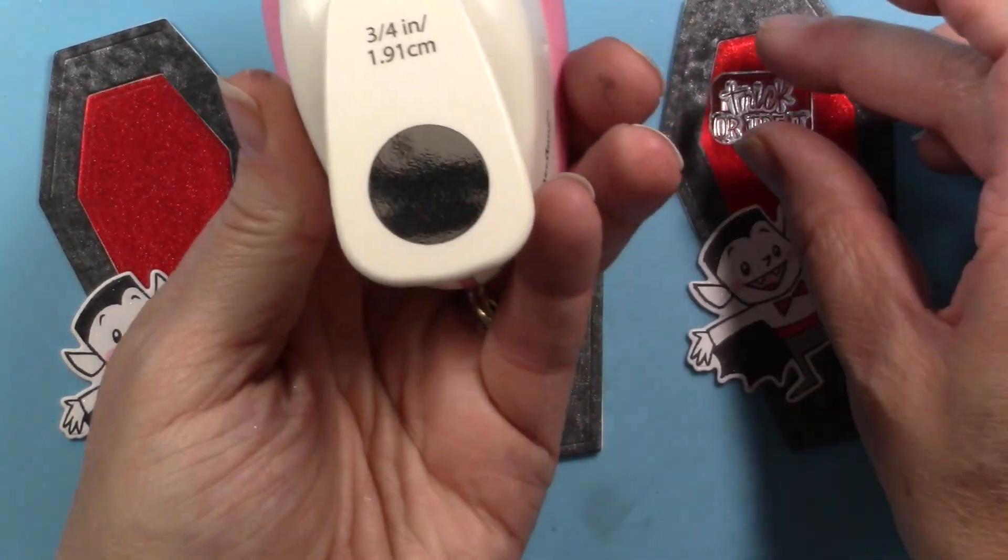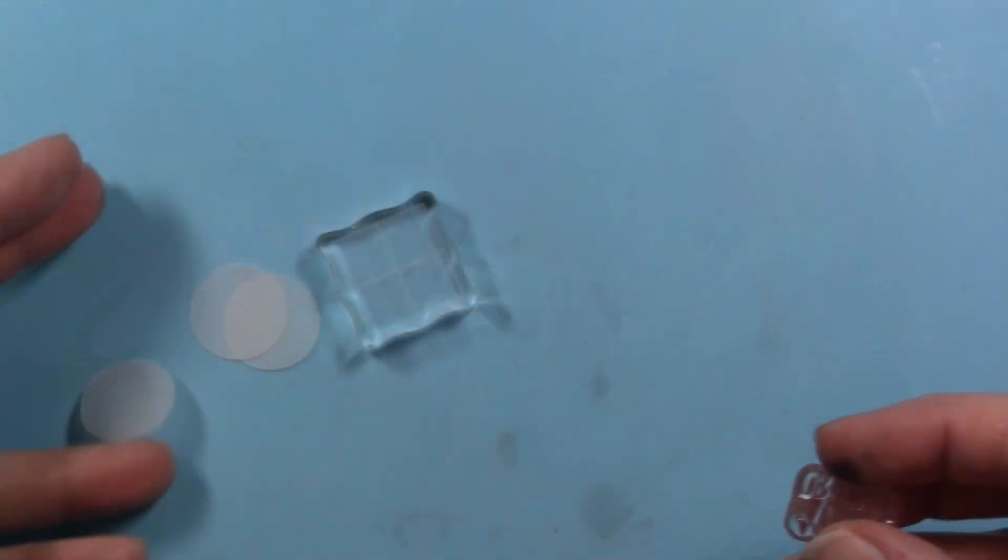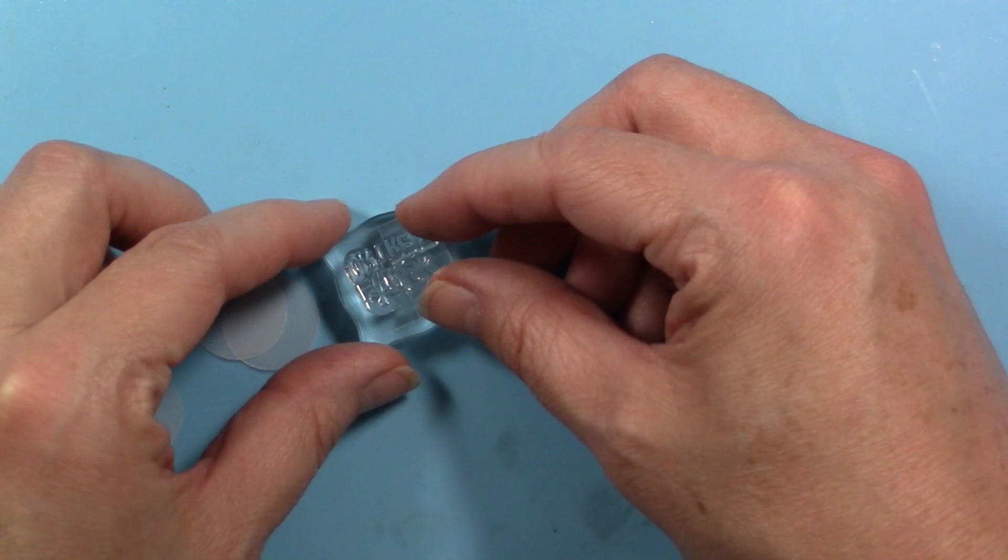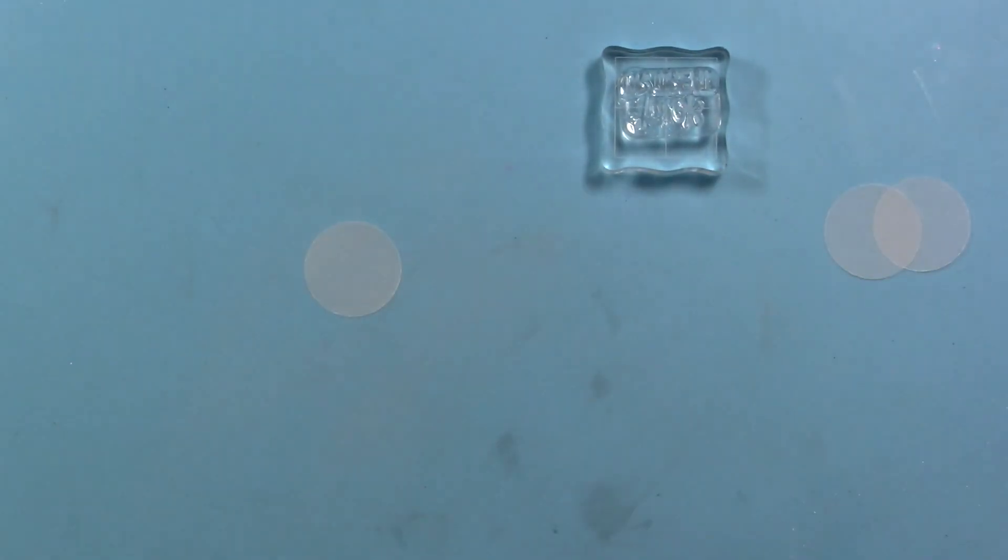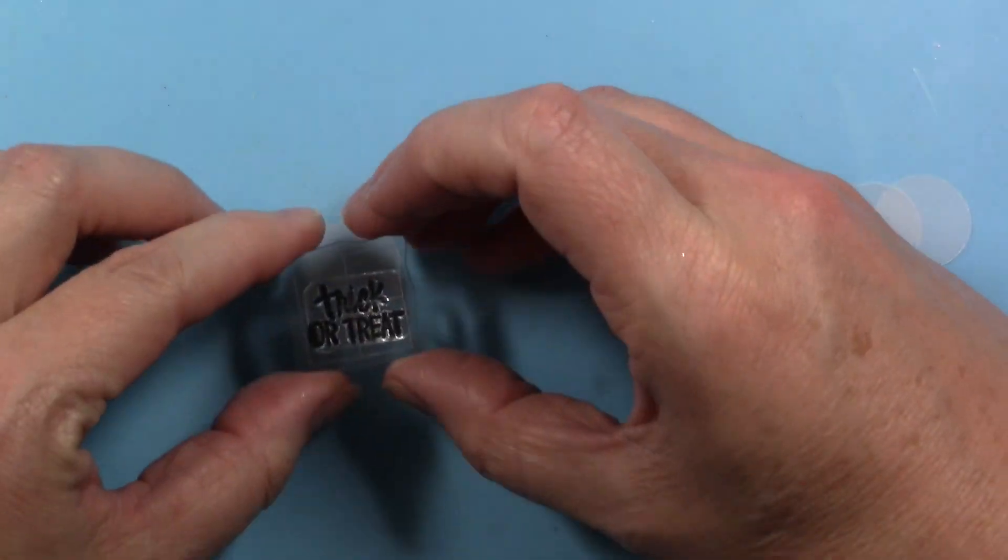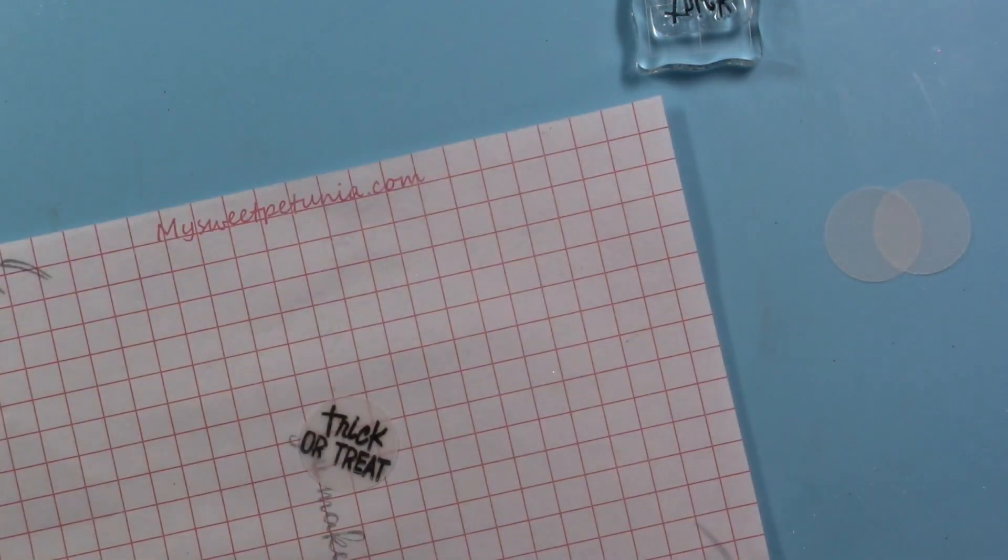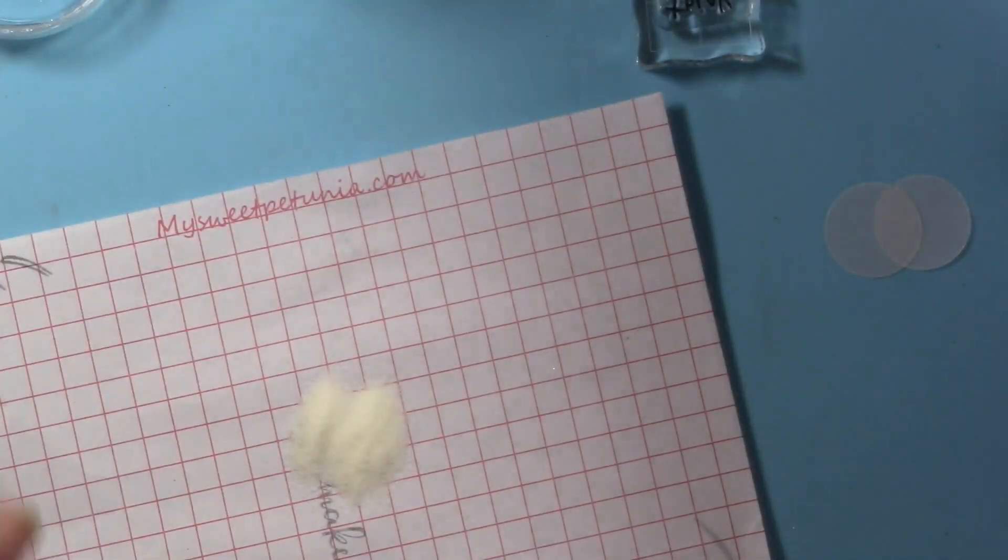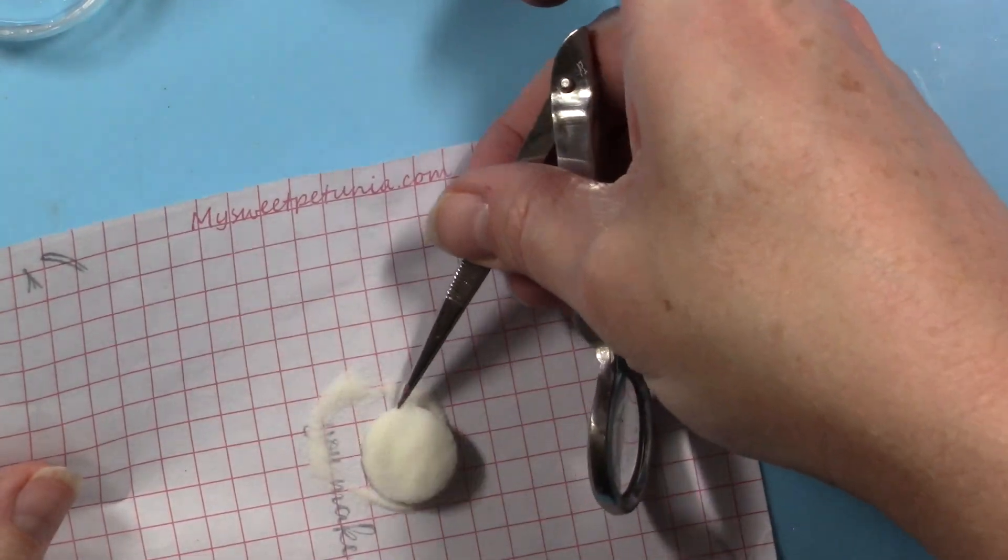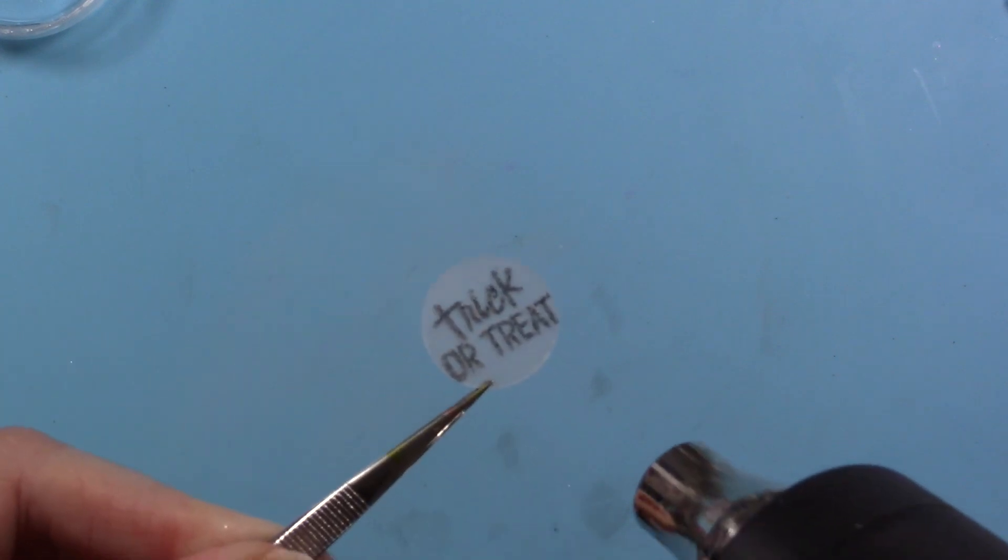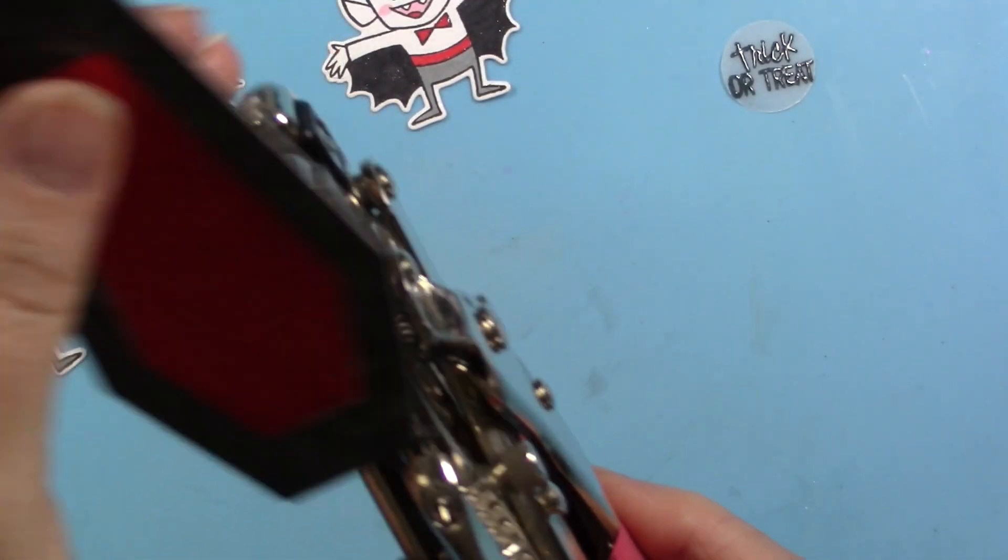So next I'm going to take this 3/4 inch hole punch—or I should say a circle punch—I'm going to punch this small circle, and I'm going to take this little trick-or-treat sentiment and I will emboss it. So I'm adding a little bit of anti-static powder to the vellum and then I'm stamping onto the vellum and then adding some clear embossing powder. Now the ink that I used is the VersaFine Clair; it works great for embossing. And so I put that clear embossing powder on there, hold with my tweezers, and then heat it up. It gets very hot and it blows all over the place, so that's why I'd like to use tweezers.